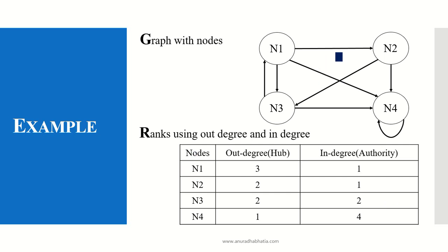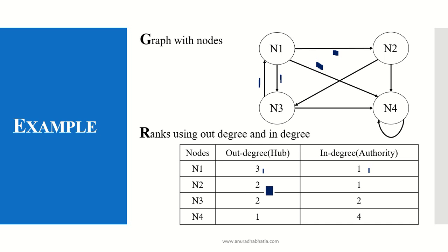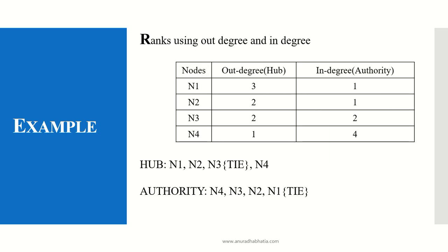From N1, we have three nodes going out, so the out-degree of N1 is 3. In-degree: there is only one node coming in from N3 to N1, so the in-degree is 1. This is how we make the table of ranks with out-degree and in-degree. From N2, I have 2 nodes coming out and 1 coming in. N3 has out-degree 2 and in-degree 2. N4 has out-degree 1 and in-degree 4.